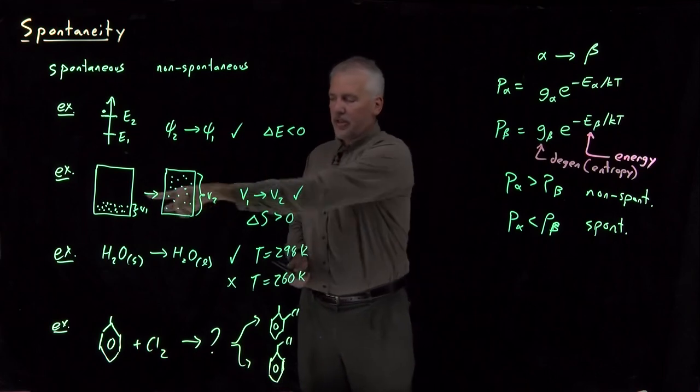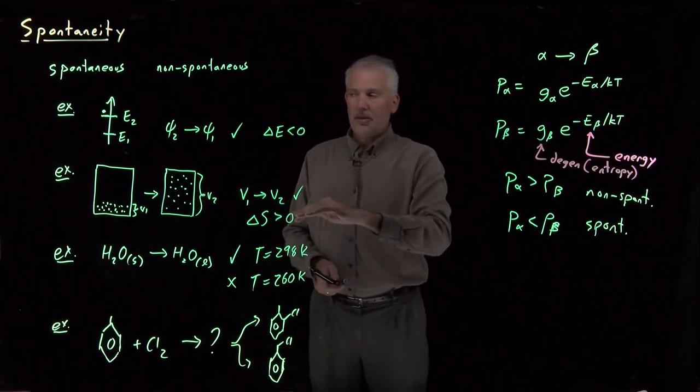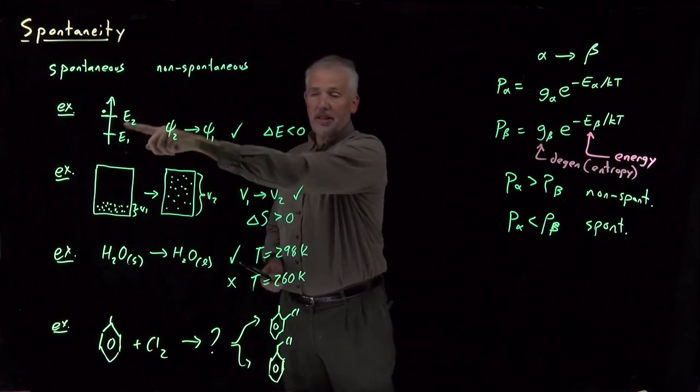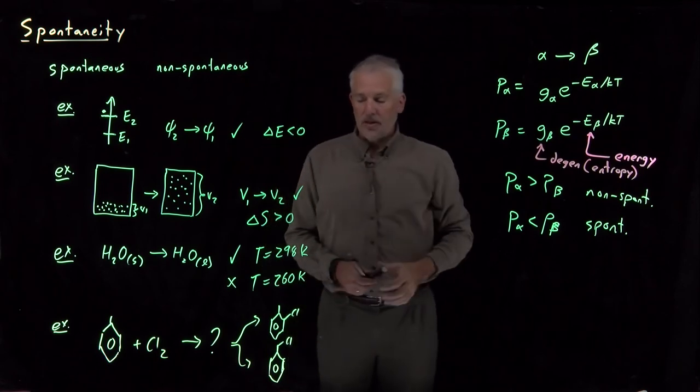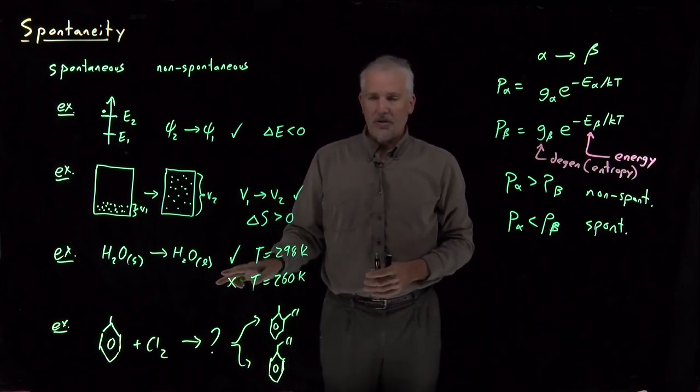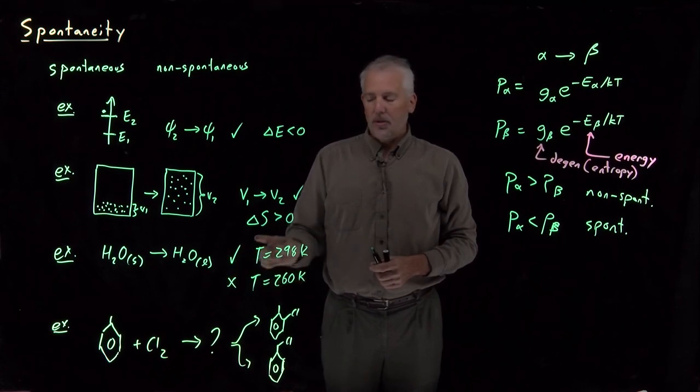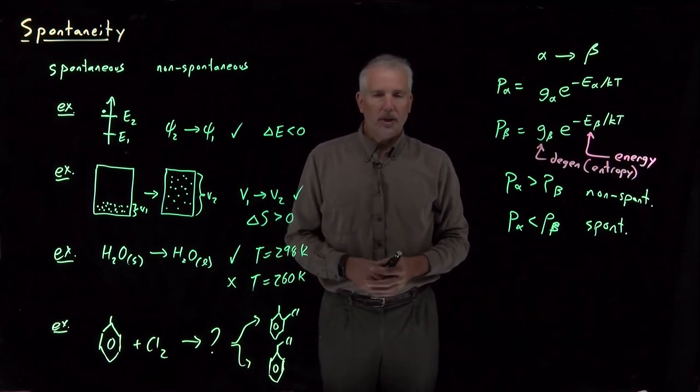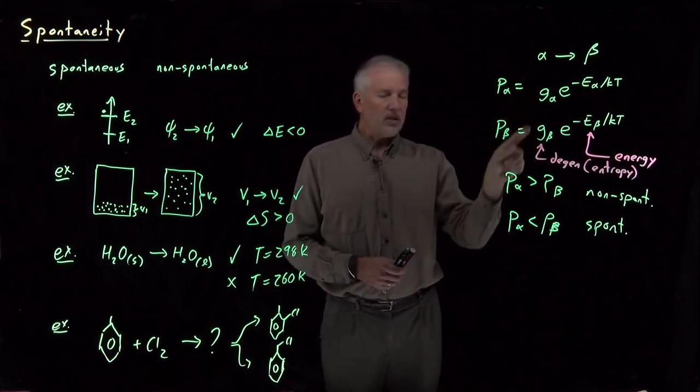So for some systems, the energy is the same and the entropy is all that matters. For other systems, if the degeneracy is the same and the energies are different, that's all that matters. For most interesting chemical systems, both the degeneracy and the entropy matter. We need to be able to make more complicated predictions about when one of these is larger than the other.